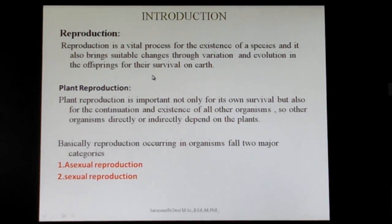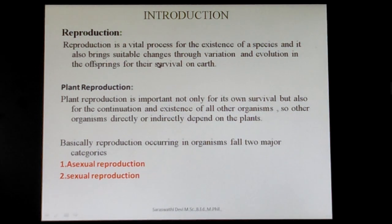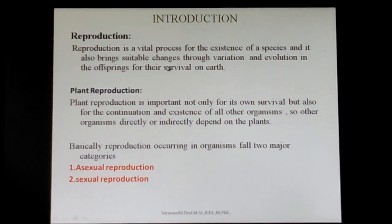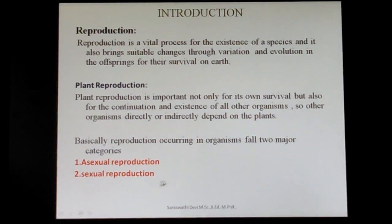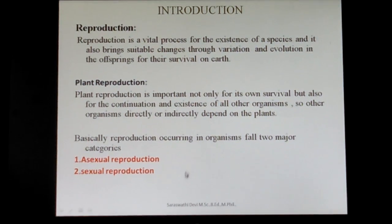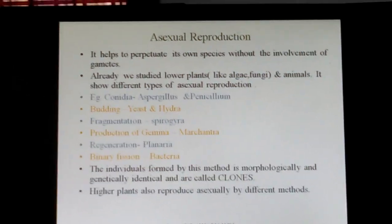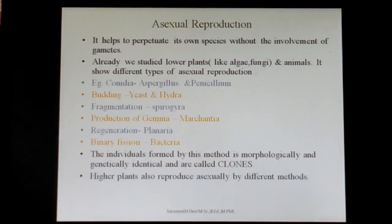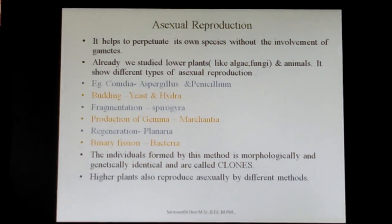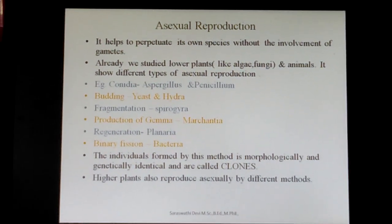Reproduction is required for plants especially, as all organisms directly or indirectly depend on plants. So plant reproduction is very essential. Basically, reproduction is divided into two types: asexual reproduction and sexual reproduction. First we will see asexual reproduction. In asexual reproduction, there is no involvement of gametes. This type of reproduction is seen in lower organisms, for example algae, fungi, and some lower animals.